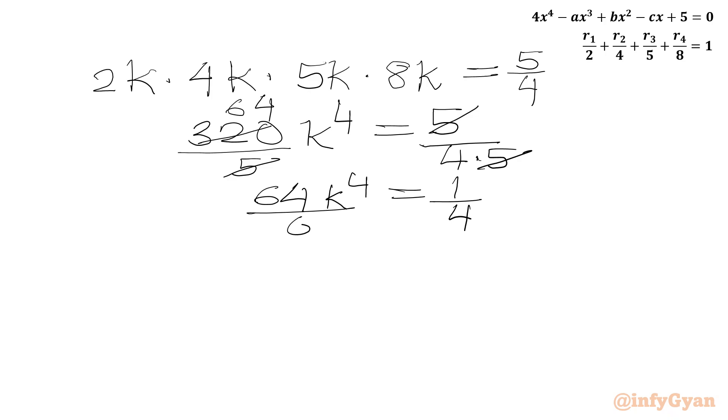So 64k to the power 4 is equal to 1 over 4. Now we will divide by 64 both sides. So 64 will be cancelled out. We are going to get k to the power 4 in the LHS. In RHS we can write 4 as it is, 64 is 4 cubed. Using exponent law we can write 1 over 4 to the power 4. Now k is of course positive as we have R1, R2, R3 positive numbers. We will take 4th root. k will be equal to 1 over 4.